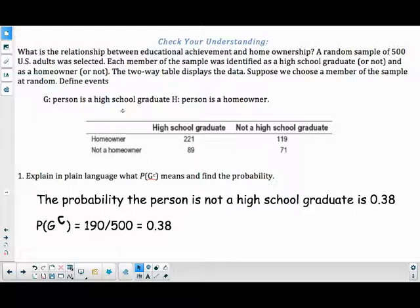What is the relationship between educational achievement and homeownership? A random sample of 500 U.S. adults was selected. Each member of the sample was identified as a high school graduate or not, and as a homeowner or not. The Two-Way Table displays the data.